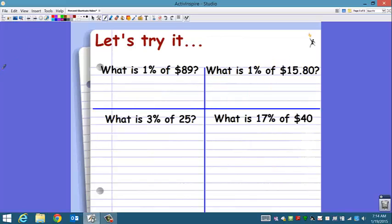So let's try some. What is 1% of 89 dollars? Well, move it two places to the left, and you get 89 hundredths. Since we are talking about money, we need to go ahead and put that dollar sign.